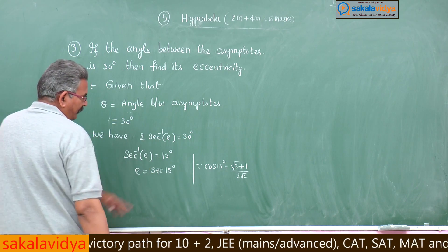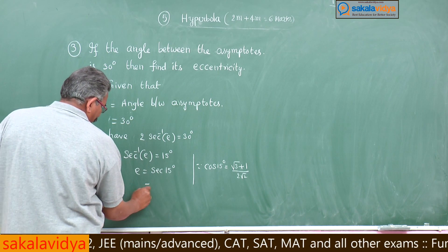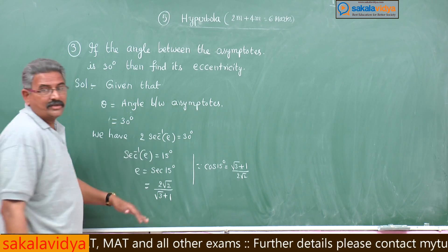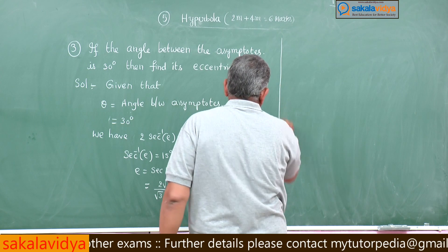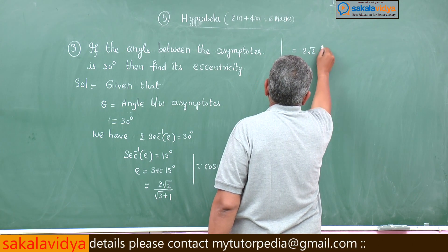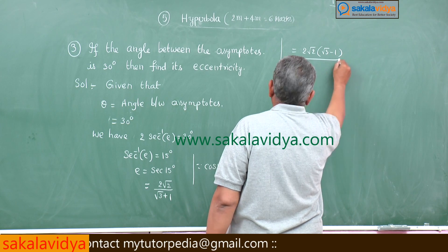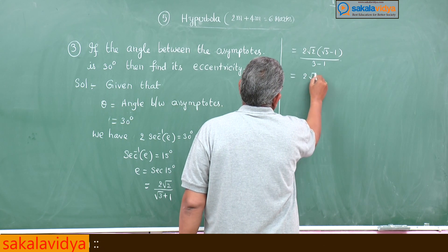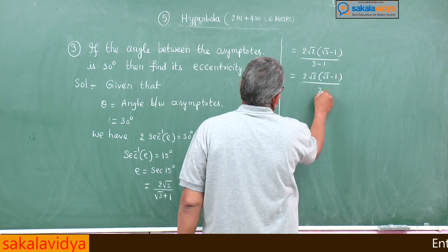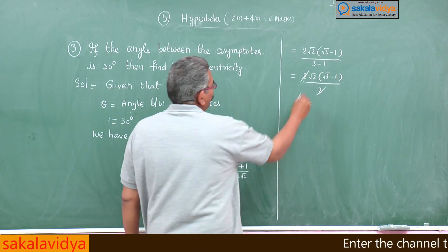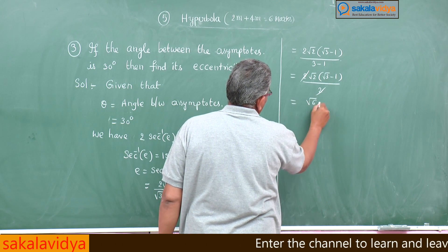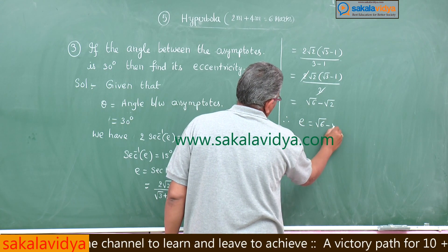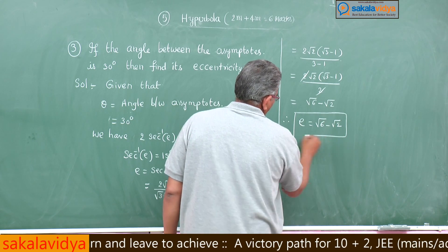sec(15°) means the reciprocal of cos(15°), so that equals 2√2/(√3 + 1). We rationalize: 2√2·(√3 − 1)/((√3 + 1)(√3 − 1)) = 2√2·(√3 − 1)/2. The 2s cancel, giving √2·(√3 − 1) = √6 − √2. So eccentricity is √6 − √2. This is the answer.